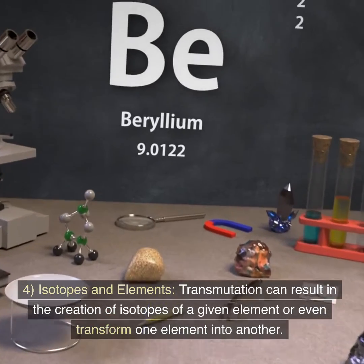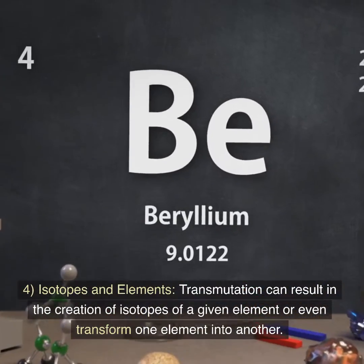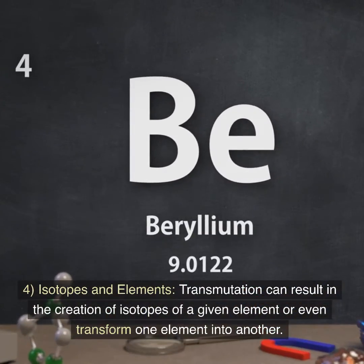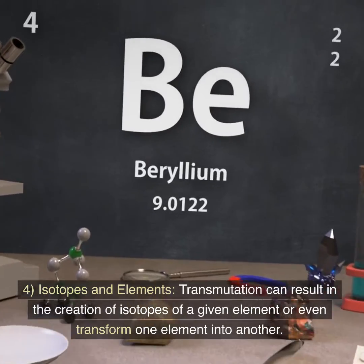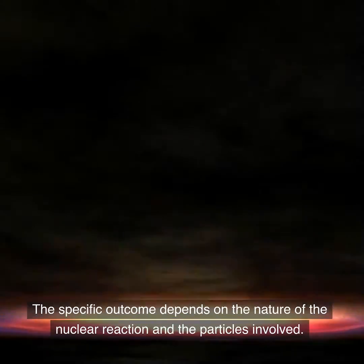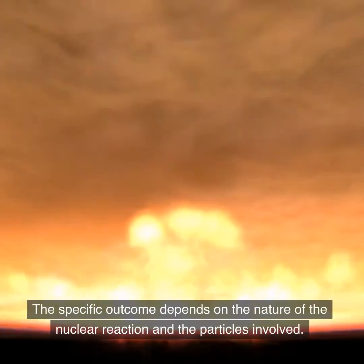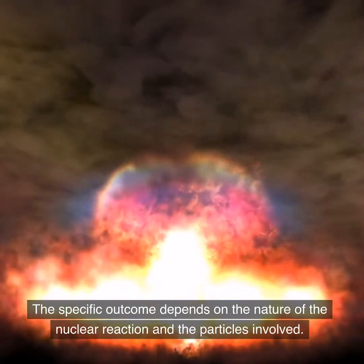4. Isotopes and elements. Transmutation can result in the creation of isotopes of a given element or even transform one element into another. The specific outcome depends on the nature of the nuclear reaction and the particles involved.